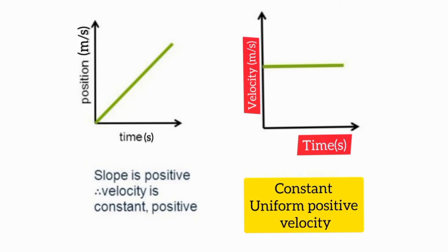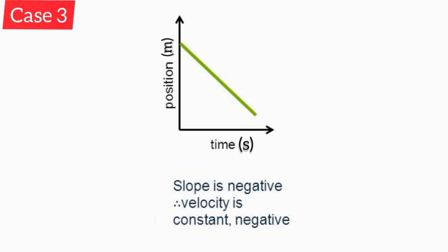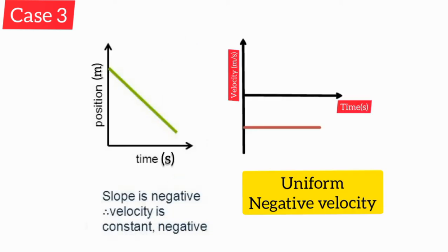Now let's move on to case number three. Here you can see a negative gradient, and the gradient is also constant. A negative gradient suggests that the velocity is also negative. Keep in mind this is not a motion of decreasing velocity — it is a motion of uniform velocity in the negative direction. The negative gradient simply shows that the object moves in the negative direction. So the v-t graph should show uniform negative velocity — a horizontal line on the negative side.